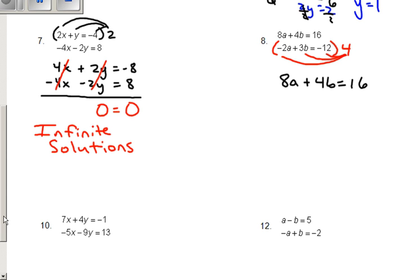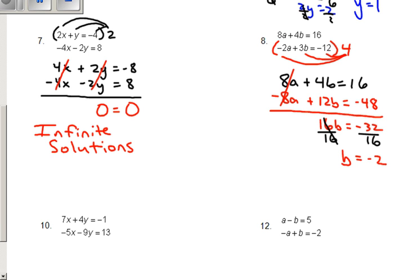Bottom one, we get negative 8a plus 12b equals negative 48. I'm going to go ahead and add down. Those cancel out. I get 16b equals negative 32. Divide by 16. Those cancel. I'm going to go ahead and get b equals negative 2.